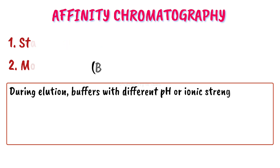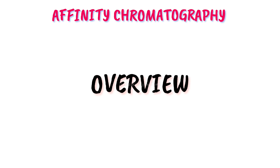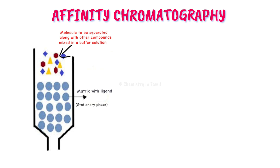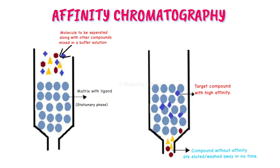Now, how to perform affinity chromatography — an overview. First, we prepare the stationary phase. For example, to purify a substrate, we use a very specific enzyme bound in the matrix, which is filled into a glass column. We dissolve the sample in buffer and pass it through the column. The substrate binds with high affinity to the enzyme at the active site.